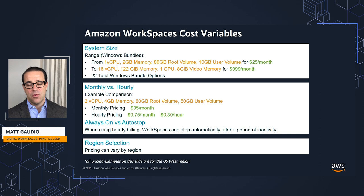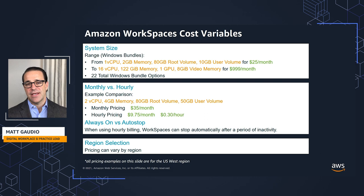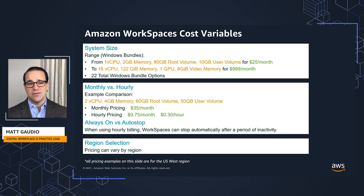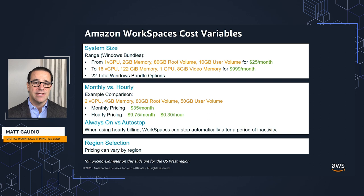The last variable is region selection. In most cases, your region selection will be dictated by variables other than cost — things like data residency and compliance with legal regulations, or application proximity. For example, if your SAP application is running in the US West region, you'd likely want to put the endpoint there too to avoid latency. But when you do have flexibility, keep in mind that the region affects the cost, and look for the one with the lowest cost.